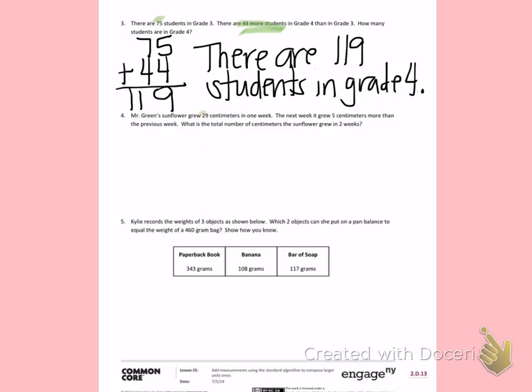I know in the first week, the sunflower grew 29 centimeters, and in the second week, it grew 5 centimeters more. I can find the total using those two numbers. So I will add 29 centimeters plus 5 centimeters.